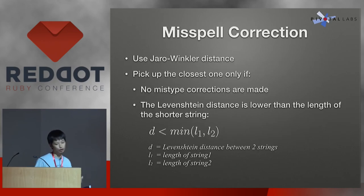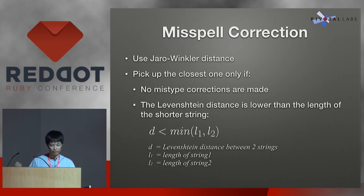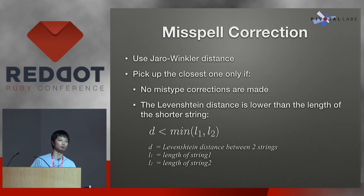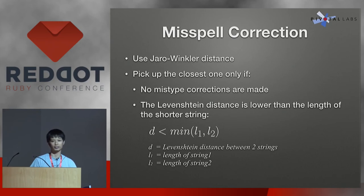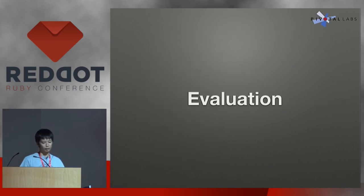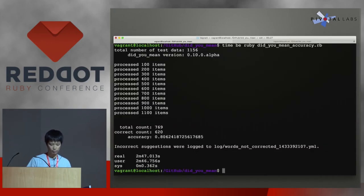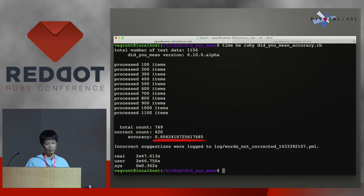Now let's talk about the misspell correction in DidYouMean gem. It uses Jaro-Winkler distance, and then picks up the closest one, only if no mistype corrections are made. The Levenshtein distance should be lower than the length of the shorter string, because sometimes the Jaro-Winkler distance could be high even if the Levenshtein distance is really high, and then it would suggest something that is not related. After re-evaluation, the accuracy increased by about 7% to about 80%, which is great.